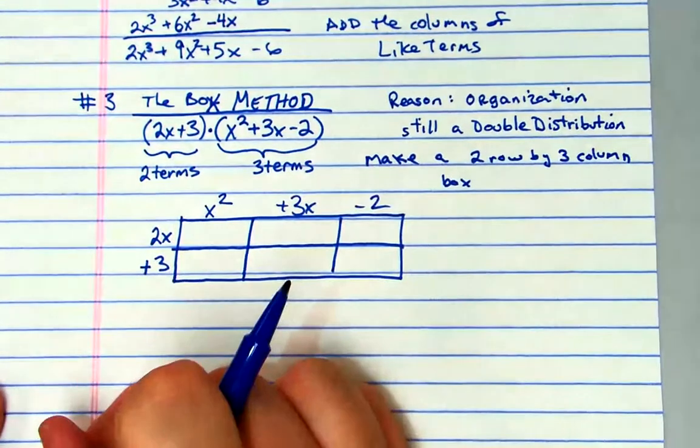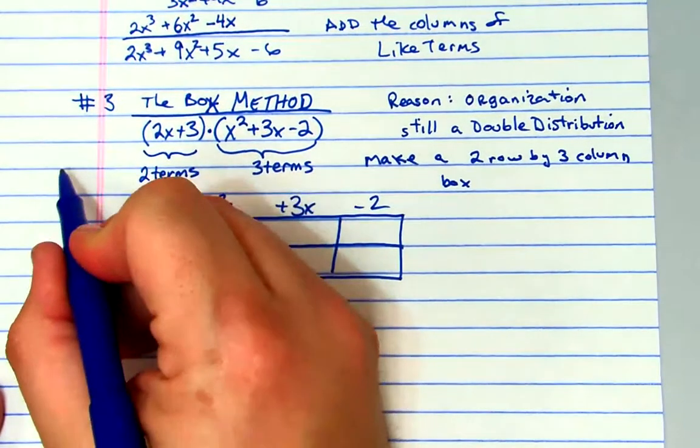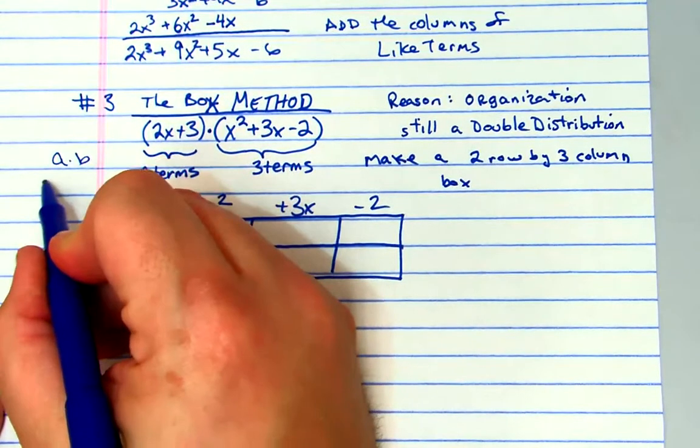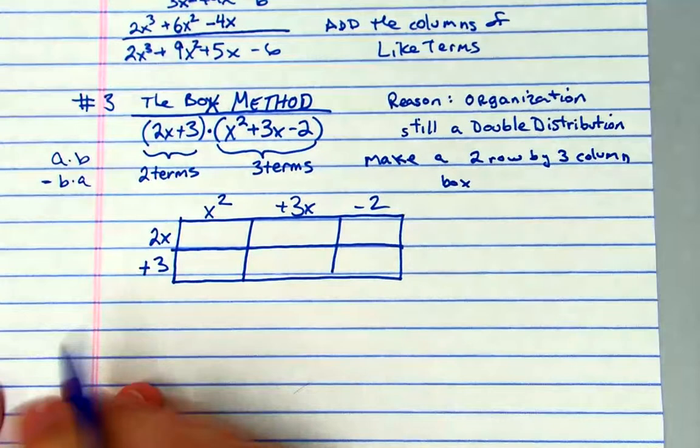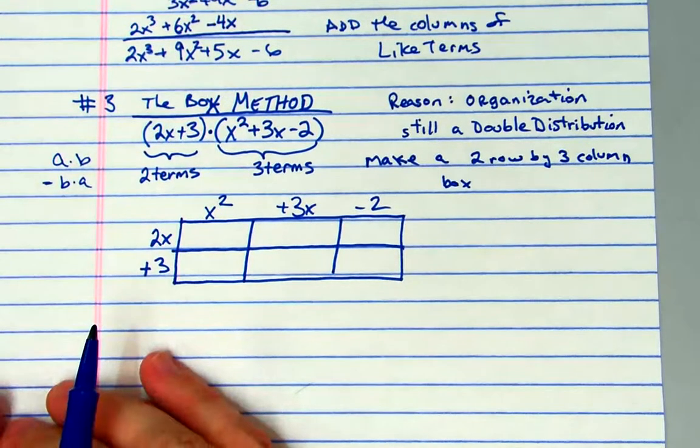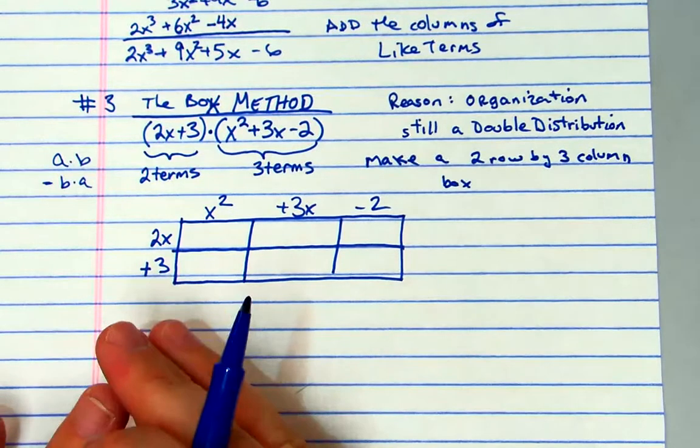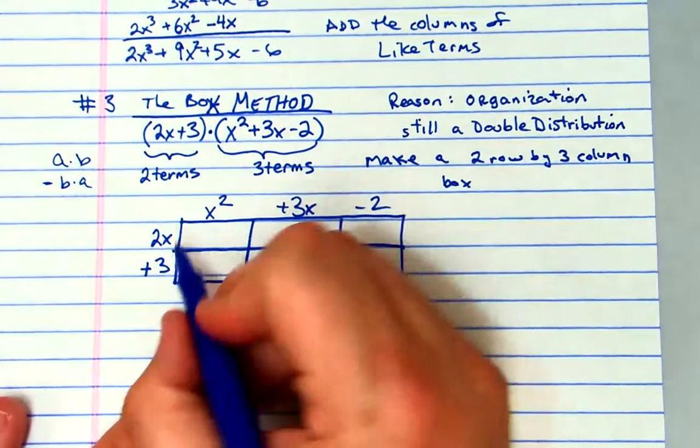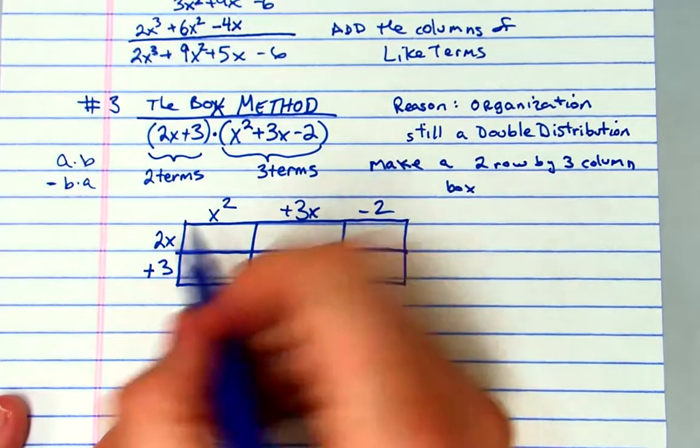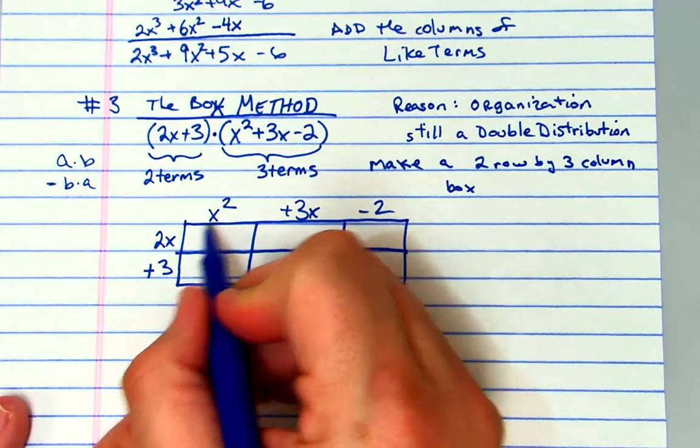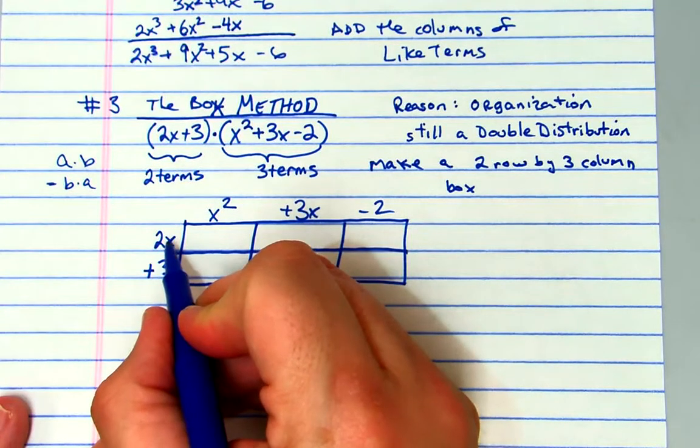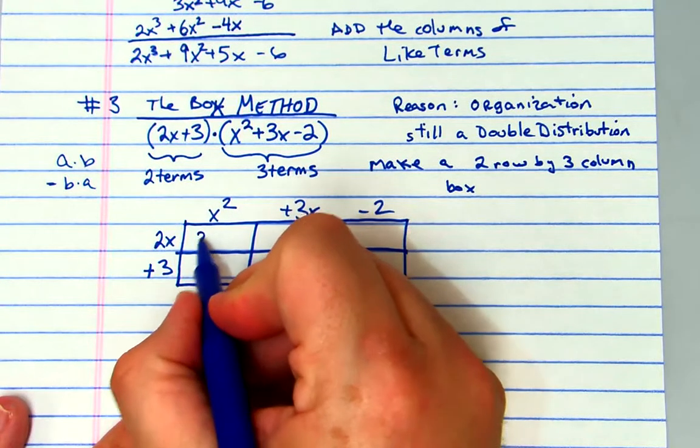So I have the top part is the trinomial, there's the binomial. Could we have flipped it and put that on top and that on the bottom? Absolutely. Remember the rule: a times b is equal to b times a. Now here's the thing: inside the box you multiply the row value times the column value for that box.